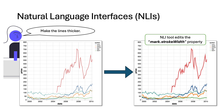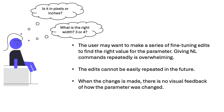Though this solves the problem of remembering property names, natural language interfaces have their own sets of challenges too. For example, Alice might not know the exact value of the parameter she needs to change, and wants to make a series of fine-tuning edits to find the right value. Giving natural language commands repeatedly is overwhelming. Also, she cannot easily repeat these edits in the future. And when the change is made, there is no visual feedback of how the parameter was changed — only the final visualization.